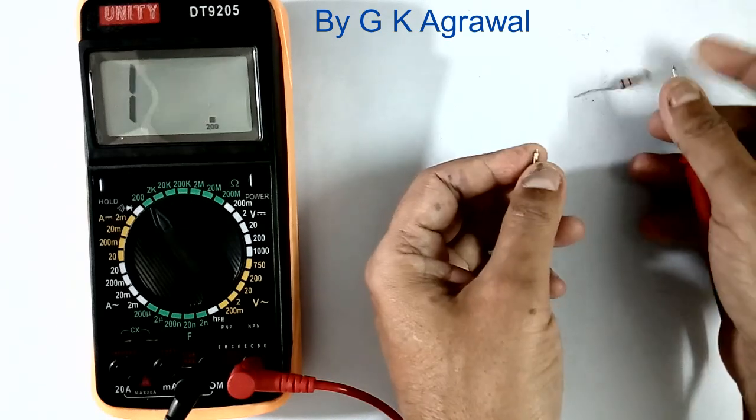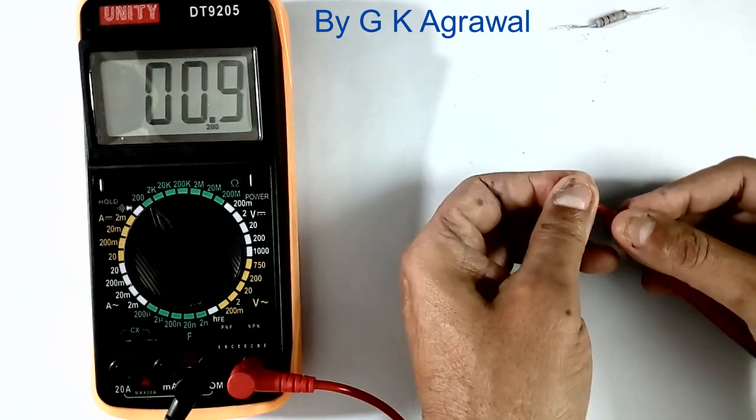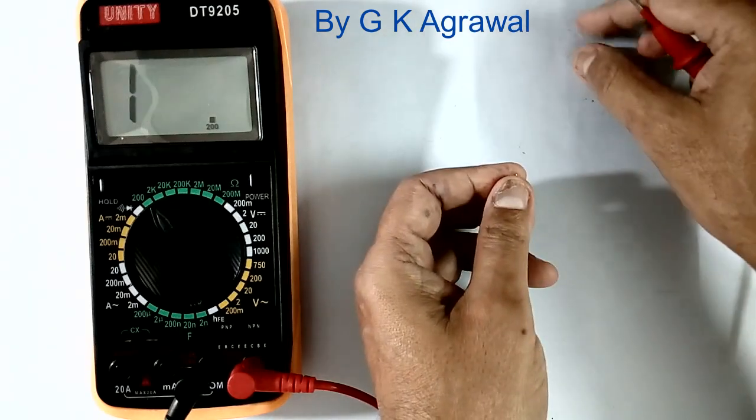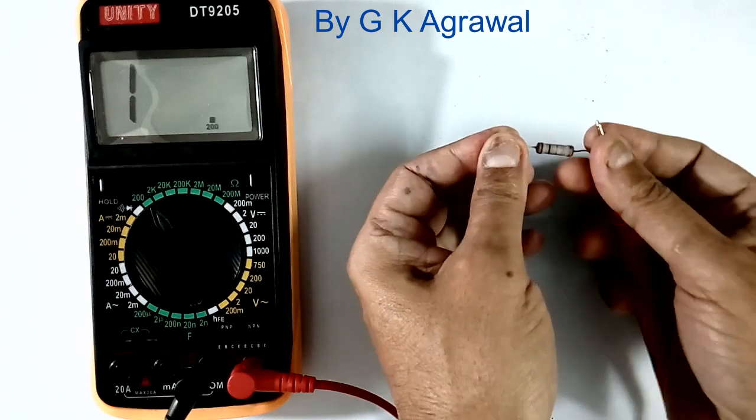First we will measure like this, 2.8 ohms. Then we will measure like this, 0.6 ohms. This 0.6 ohms we will subtract from this 2.8 ohms.